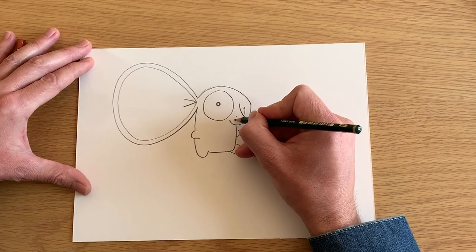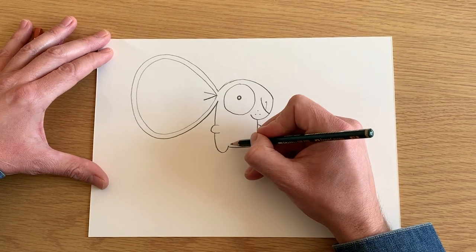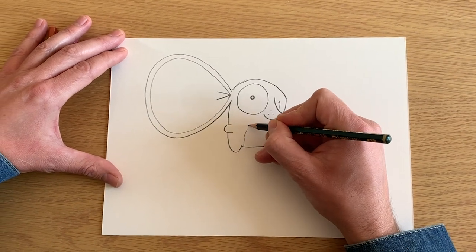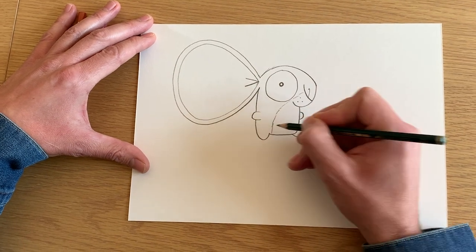I'm going to draw in three little spots for his whiskers. And then we're going to draw a little dotted line, dashed line for his tummy.